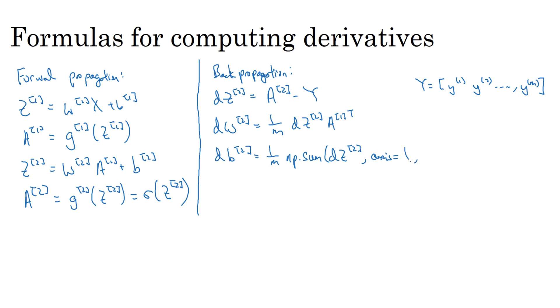db2 equals np.sum(dz2, axis=1, keepdims=True). And just a little detail, this np.sum is a Python numpy command for summing across one dimension of a matrix. In this case, summing horizontally. And what keepdims does is it prevents Python from outputting one of those funny rank one arrays, where the dimensions was, you know, n comma. So by having keepdims equals true, this ensures that Python outputs for db2 a vector that is n by one. In fact, technically, this will be, I guess, n2 by one. In this case, it's just a one by one number. So maybe it doesn't matter. But later on, we'll see when it really matters.